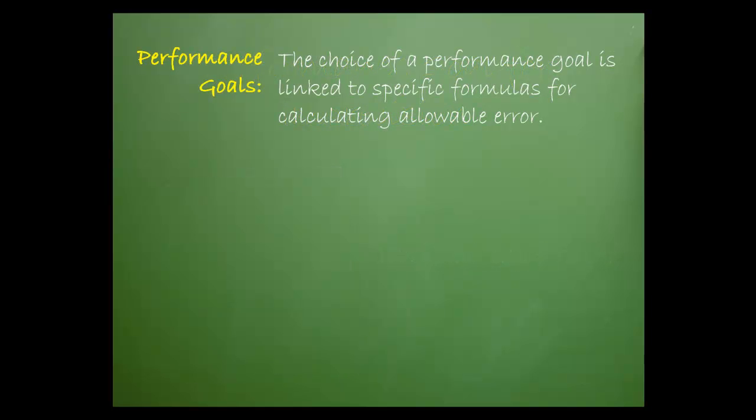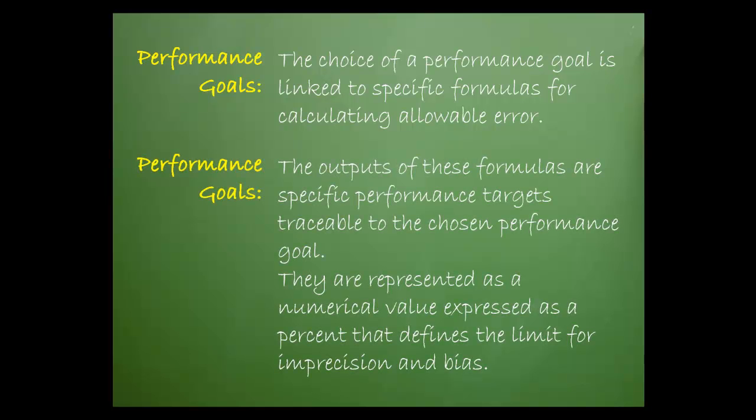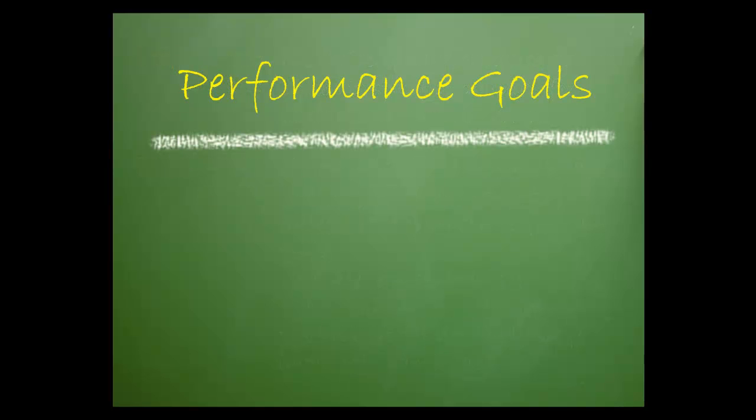The choice of a performance goal is linked to specific formulas for calculating allowable error. The outputs of these formulas are specific performance targets traceable to the chosen performance goal. They are represented as a numerical value expressed as a percent that defines the limit for imprecision and bias. There are three performance goals from which the laboratory can choose: minimum, desirable, or optimal.